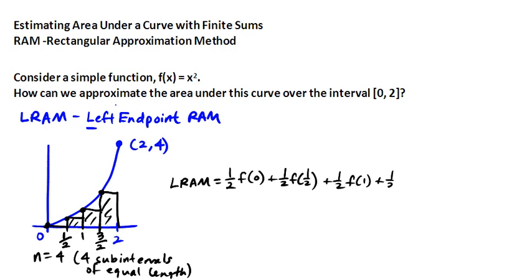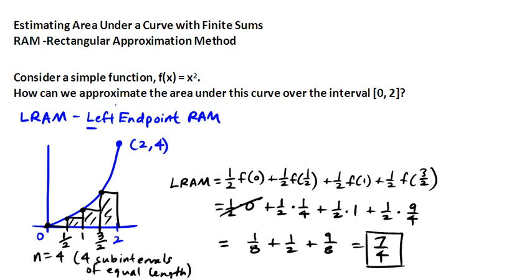Alright, so computing this, we get half times f at 0. So again, 0 is going into this function here. And so if we put in 0 for x squared, we just get 0. If we put in a half for x squared, we get 1 fourth. If we put in 1 for x squared, we get 1. If we put in 3 halves for x squared, we get 9 fourths. So evaluating this using LRAM, we approximate the area under x squared from the interval from 0 to 2 would be 7 fourths.